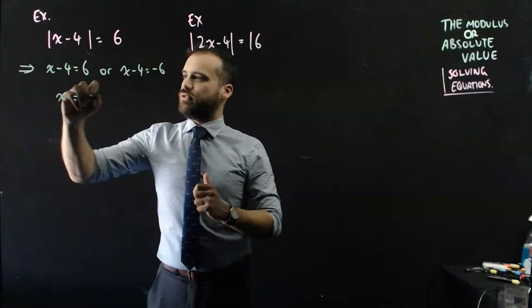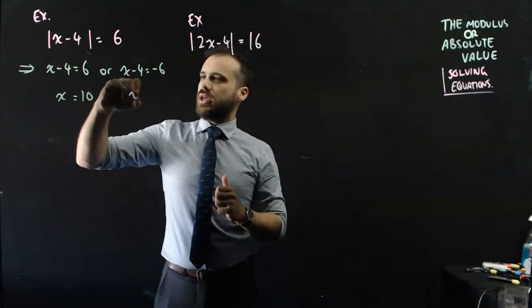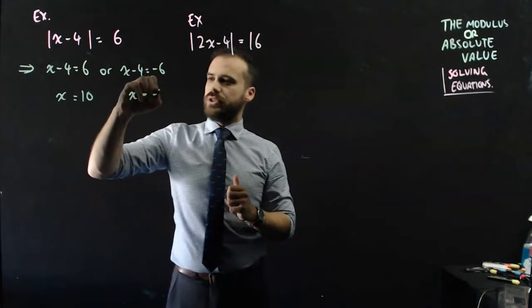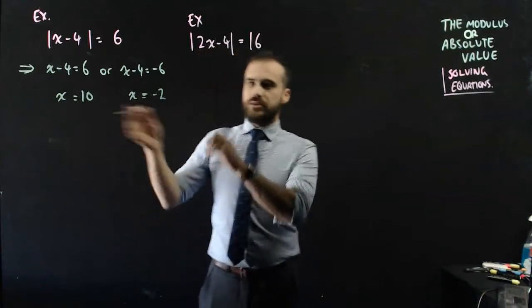So x equals 6 plus 4, which is 10, or x equals negative 6 plus 4, which is negative 2. We get two solutions.